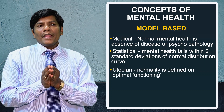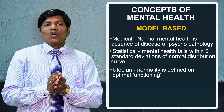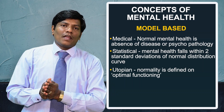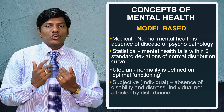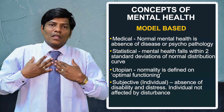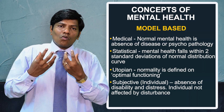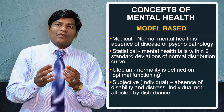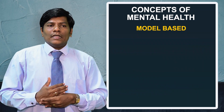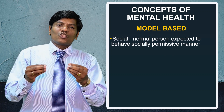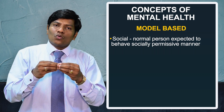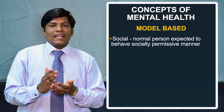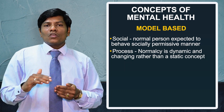The utopian model means optimal functioning — those achieving optimal day-to-day functioning are mentally healthy. The subjective (individual) model says those with good social involvement and daily activity participation are mentally healthy, while those lacking psychological well-being are mentally ill. The social model states that mental health involves social adjustment, adherence to social norms, and maintaining good social relationships.